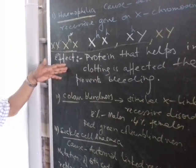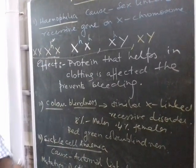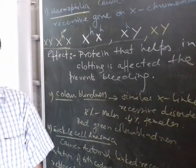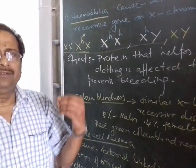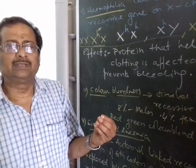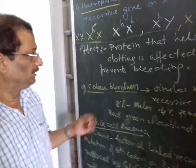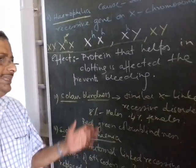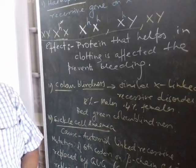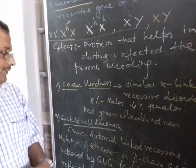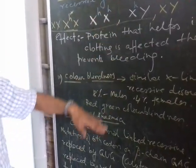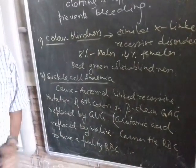In hemophilia, the protein that helps in blood clotting is affected, so it is called a bleeder's disease — a wound will bleed and the person can bleed to death. Color blindness is also an X-linked recessive disorder; about 8% of males and 0.4% of females are affected with red-green color blindness, and it follows the same inheritance pattern as hemophilia.